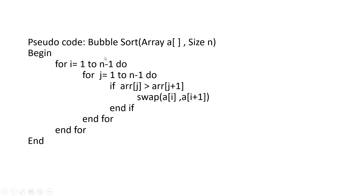Another example: the pseudocode to find the bubble sort. Bubble sort takes two inputs — the array A and the size of the array N. Begin: for i equal to 1 to N minus 1 do, for j equal to 1 to N minus 1 do — this is the outer loop and this is the inner loop. If array[j] is greater than array[j+1], swap the elements. End if, end for (inner), end for (outer), end. So this is a pseudocode for finding the bubble sort.